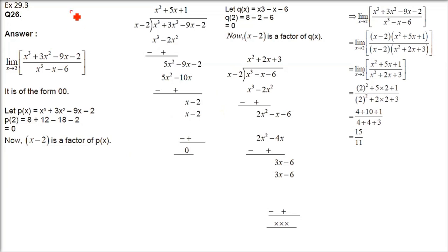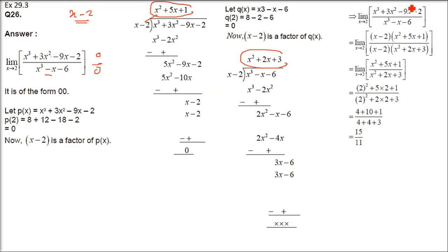Question number 26 is similar. When x tends to 2, x minus 2 is definitely a factor. Divide both numerator and denominator by x minus 2 to get the other factor. When you put x as 2, both numerator and denominator give 0. The numerator becomes (x-2)(x² + 5x + 1), and the denominator becomes (x-2)(x² + 2x + 3). Cancel x minus 2, then put x as 2, and you get 15 by 11.